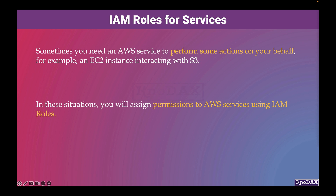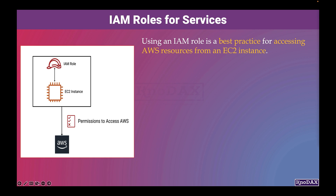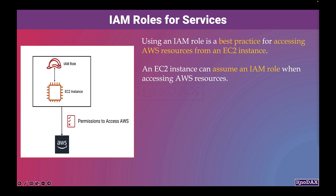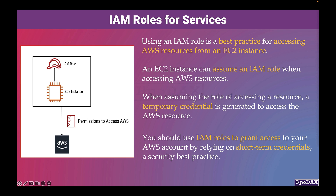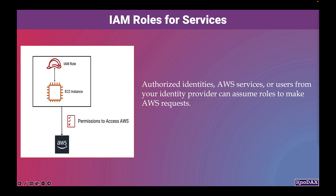Using an IAM role is the best practice for accessing AWS resources from an EC2 instance. An EC2 instance can assume an IAM role when accessing AWS resources, and a temporary credential is generated to access the AWS resource. You should use IAM roles to grant access to your AWS account by relying on short-term credentials, which is a security best practice. Authorized identities, AWS services, or users from your identity provider can assume roles to make AWS requests.